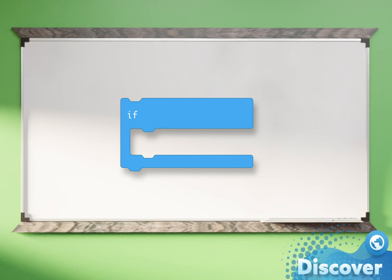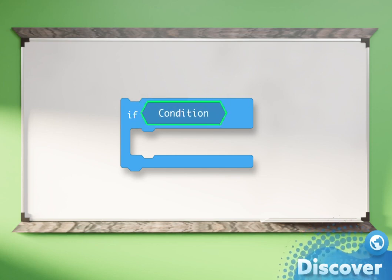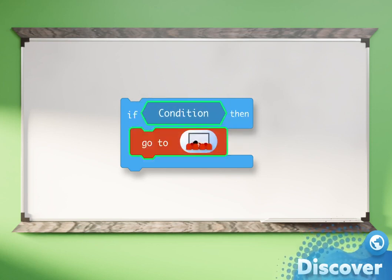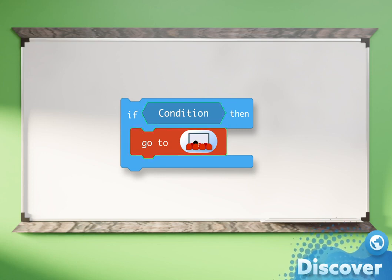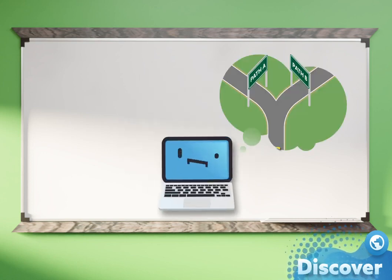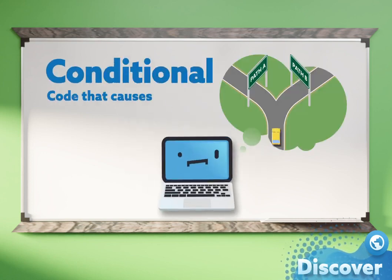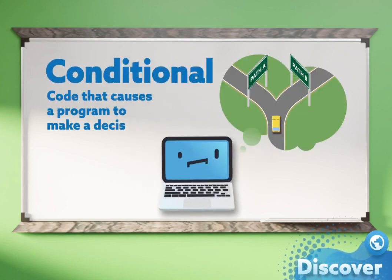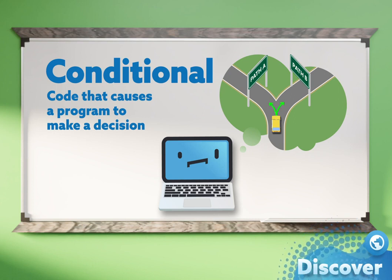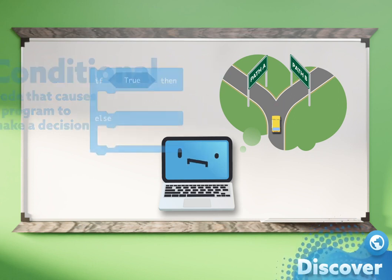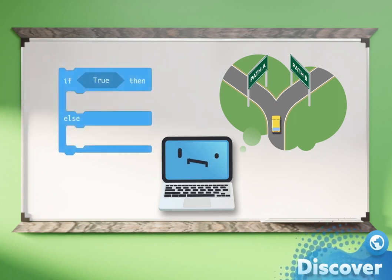we as coders have the power to create these conditions that must happen before allowing other actions to happen. These conditional statements cause a program to make a decision. They create forks in the road, then instruct a program on what path to take depending on the situation.